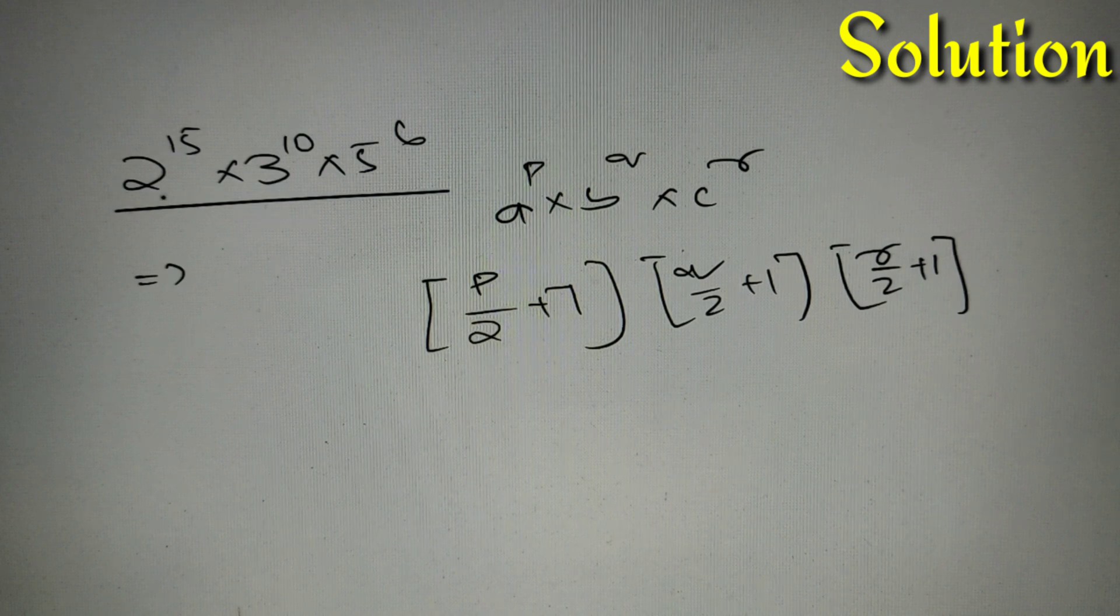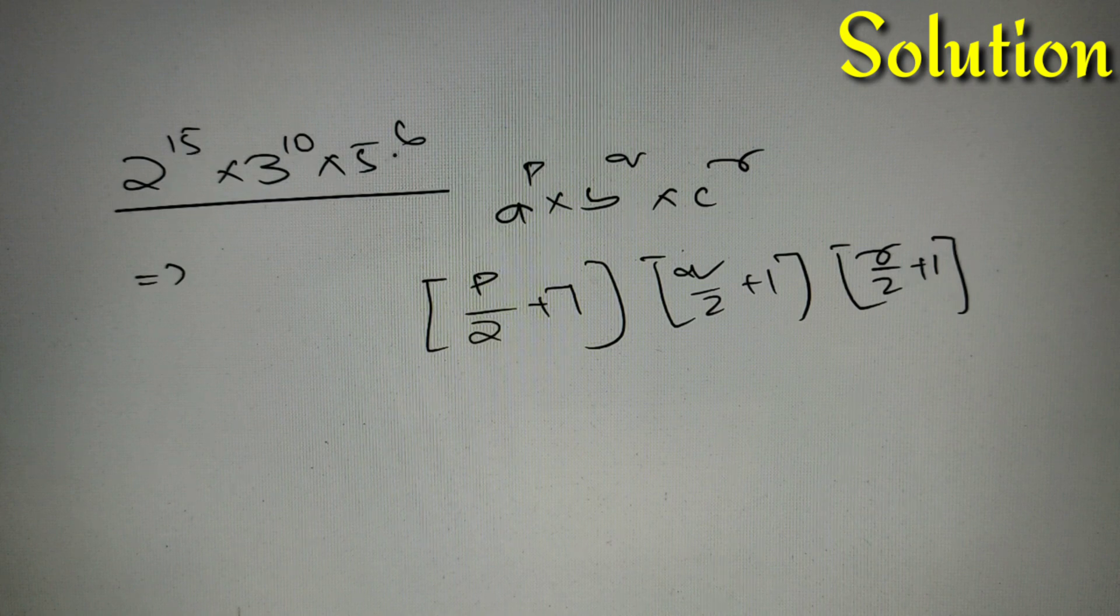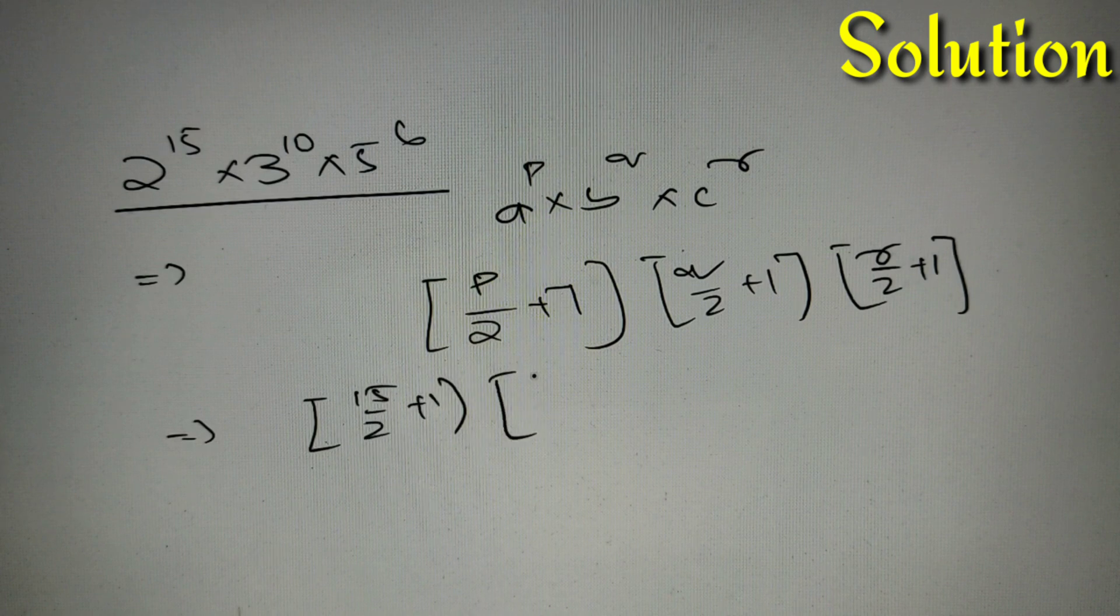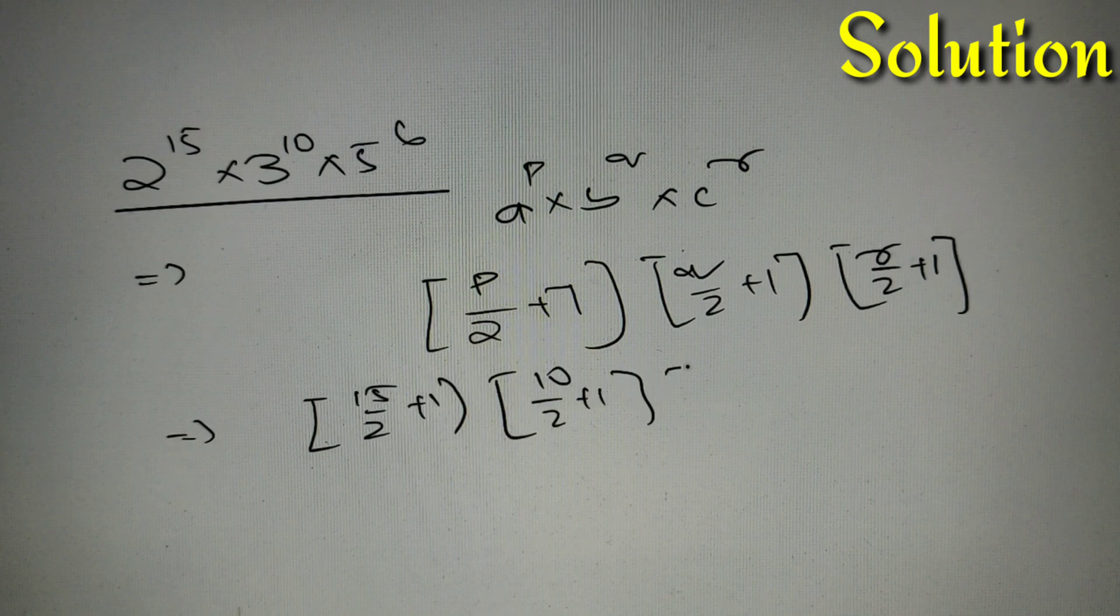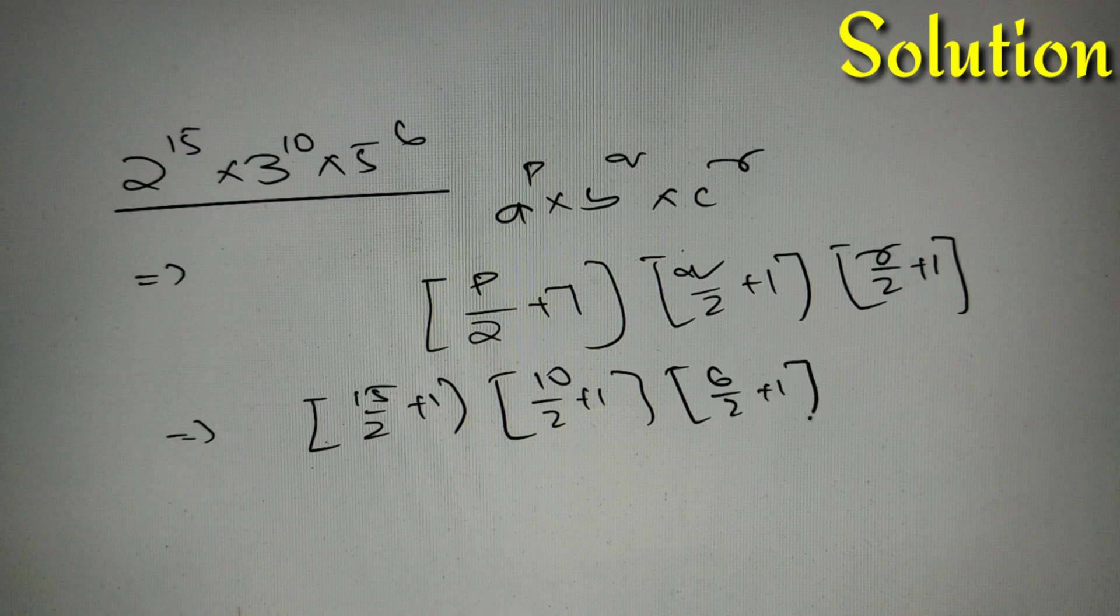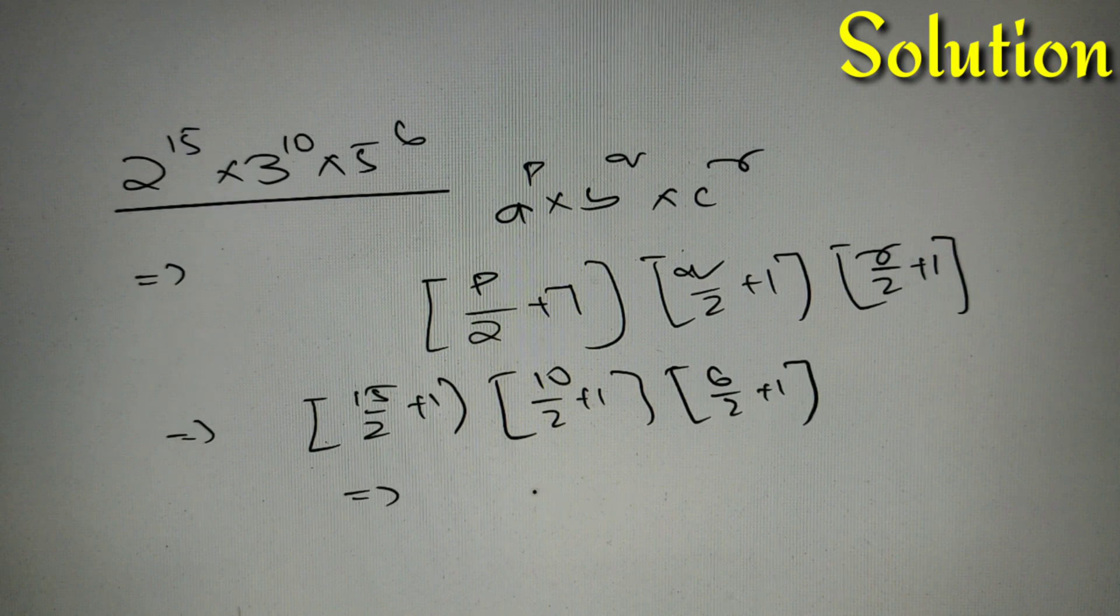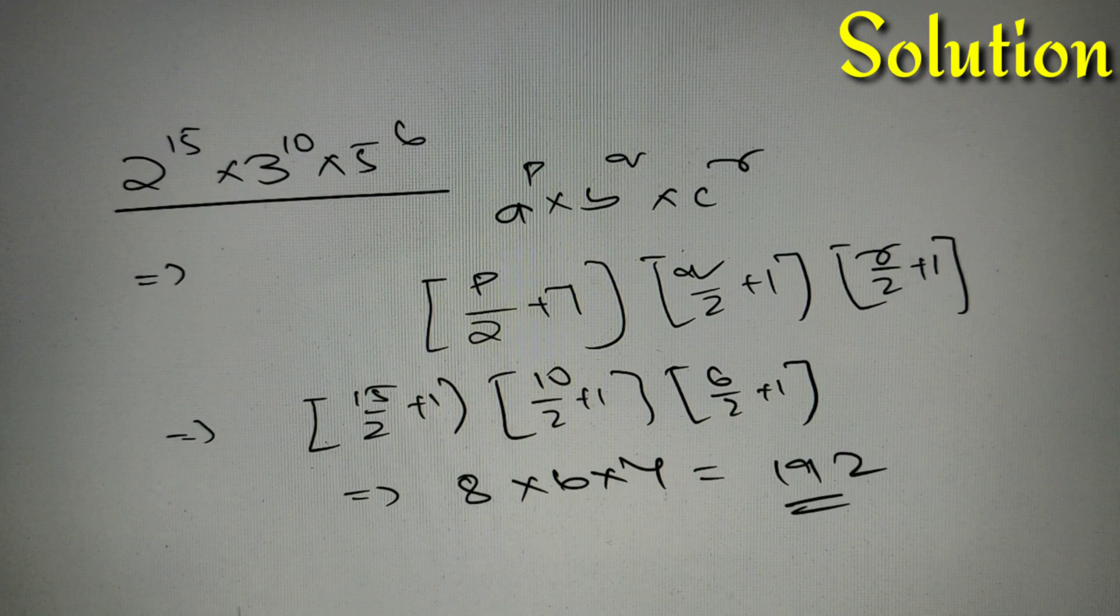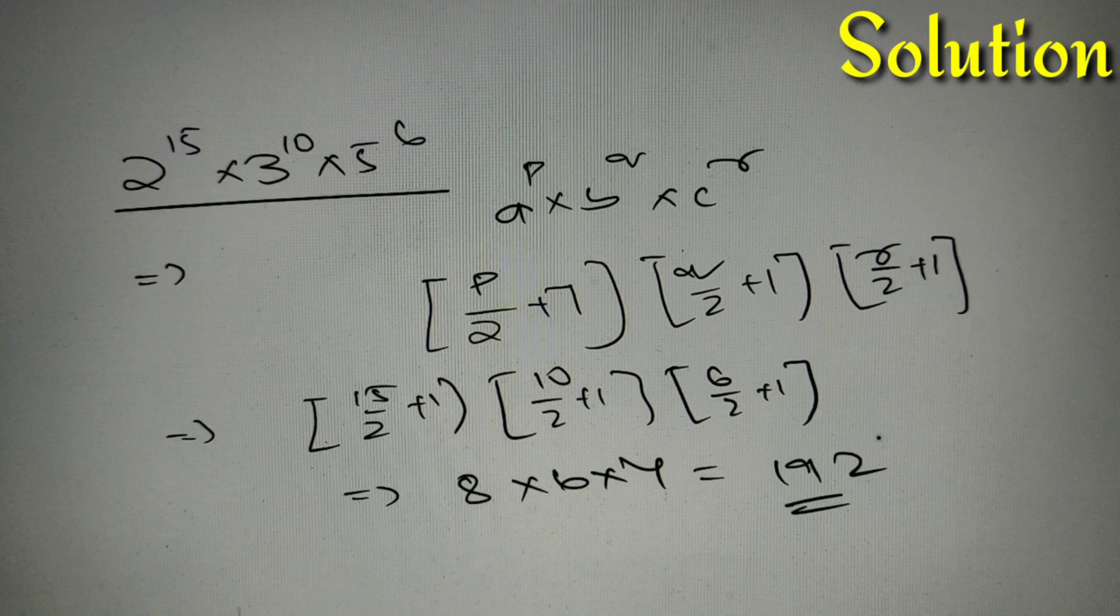So in this case, 2 raised to the power 15 into 3 raised to power 10 into 5 raised to power 6, my perfect square factors will be 15 by 2 plus 1, into 10 by 2 plus 1, into 6 by 2 plus 1. Taking the greatest integer function, we'll get 8, then 6, then 4, which on multiplication gives us 192. So we have 192 perfect square factors.